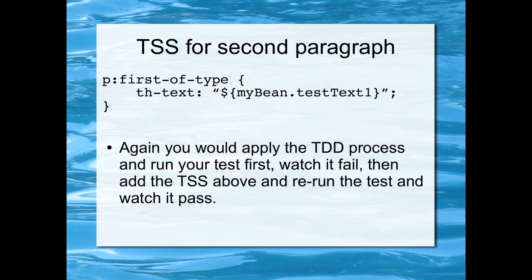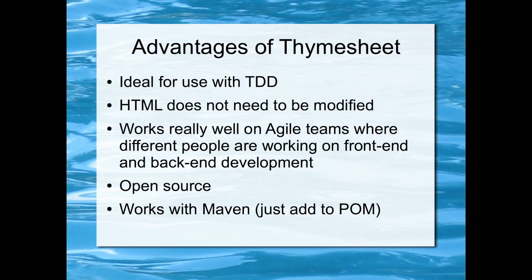So the main advantages of Timesheet are: it's great if you're using TDD. You can just get somebody else to do the HTML, and they don't need to know anything about the Java data binding — they don't need to modify that at all. It also works really well on Agile teams — Jamie's going to do a talk about Agile after the break. On the teams at Connect working on the JLR projects, we normally have different front-end and back-end developers on the team working together, and this helps stop people treading on each other's toes. And it's open source and works with Maven, so you could just add it to your Maven POM file really easily.